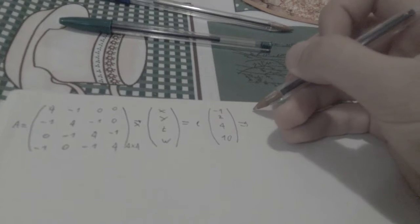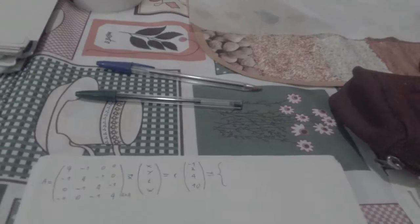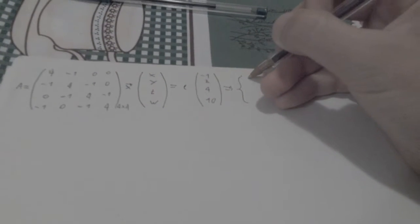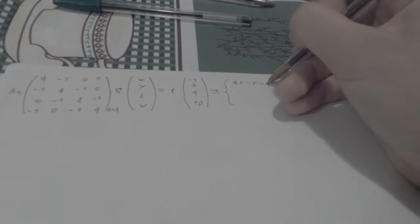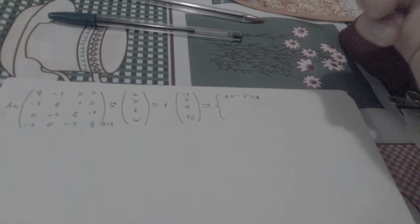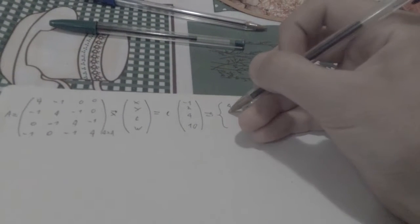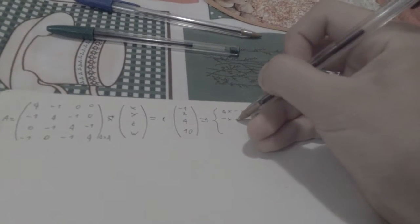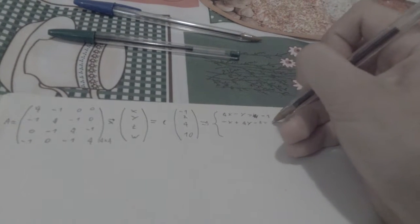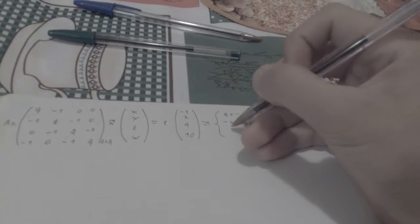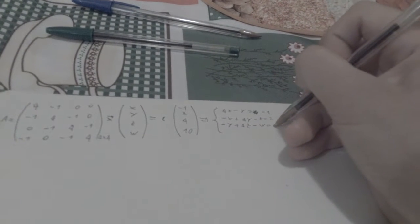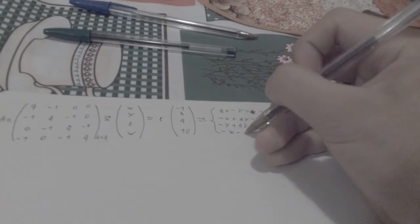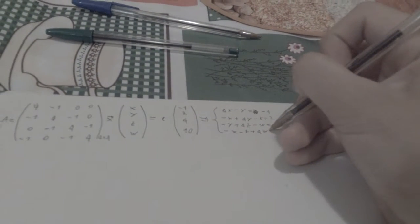Now this is our system of linear equations, which written in another way simply gives us: 4x minus y equals -1; negative x plus 4y minus z equals 2; negative y plus 4z minus w equals 4; and negative x minus z plus 4w equals 10.